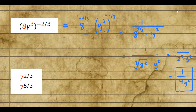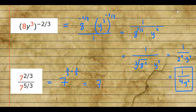For the next problem, we have 7 to the two-thirds divided by 7 to the five-thirds — the same base. The law of exponents says to subtract exponents when dividing. So this is 7 to the power two-thirds minus five-thirds. They have the same denominator of 3, so we subtract: two minus five is negative three, giving 7 to the negative three-thirds, which is 7 to the negative one. Reciprocating to make the exponent positive gives 1 over 7.